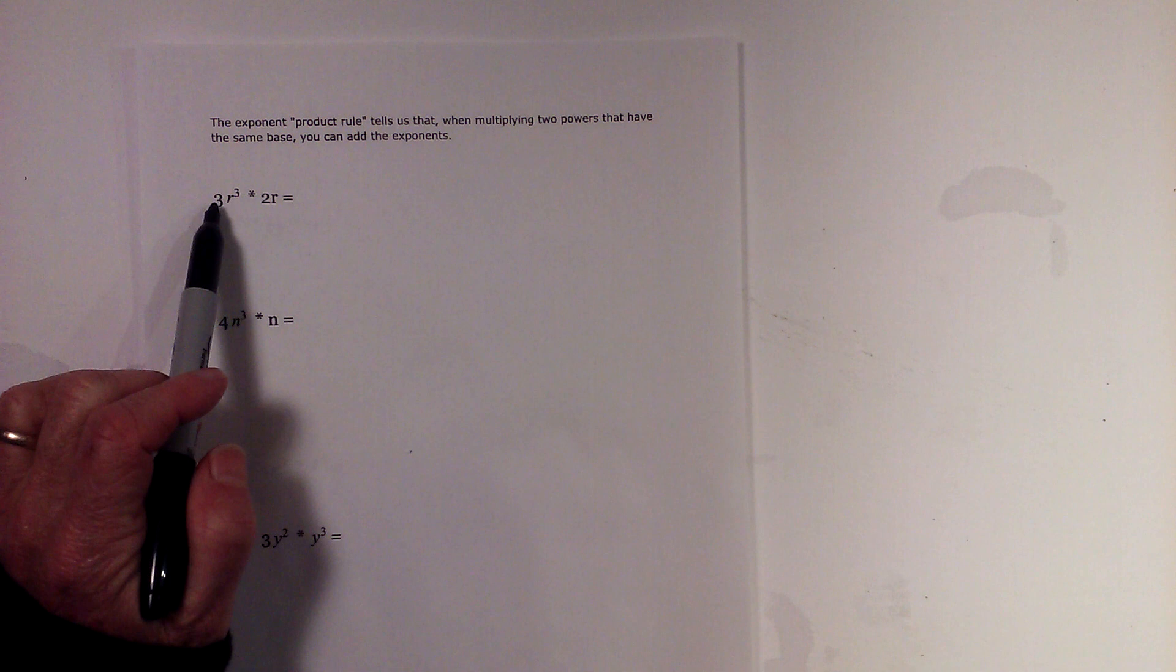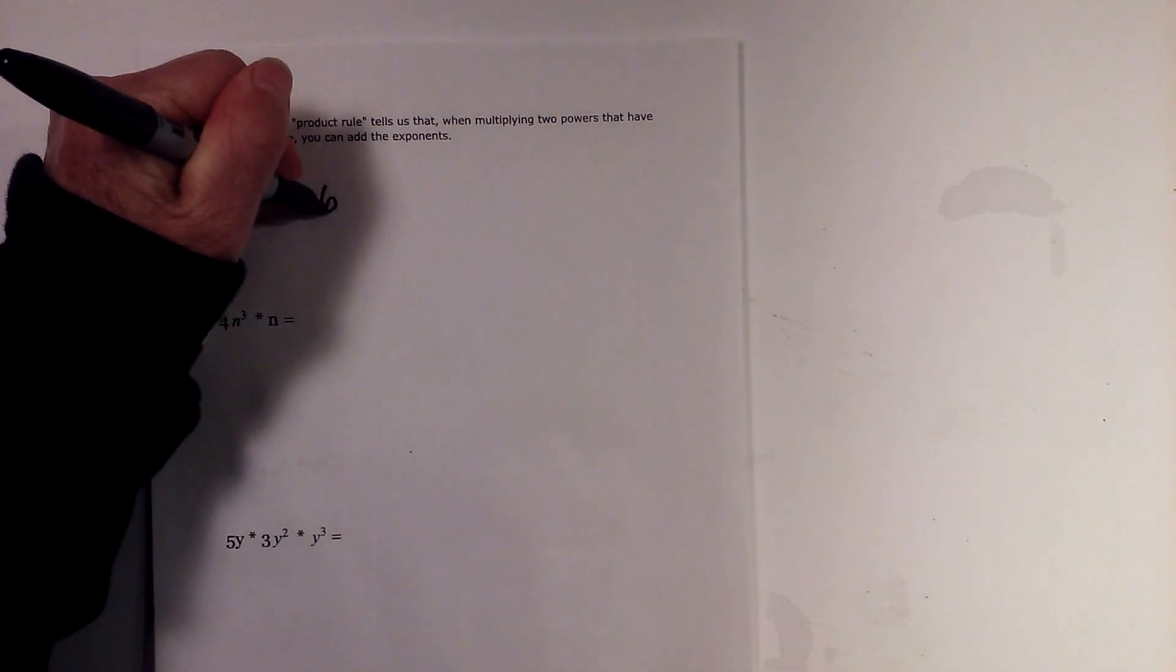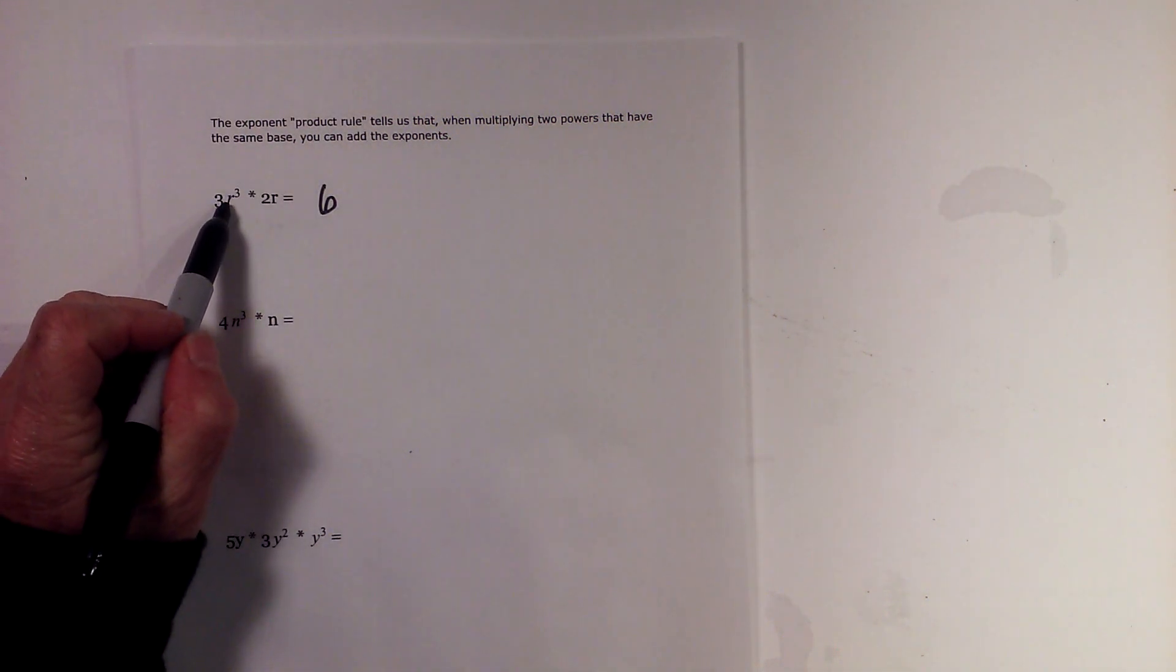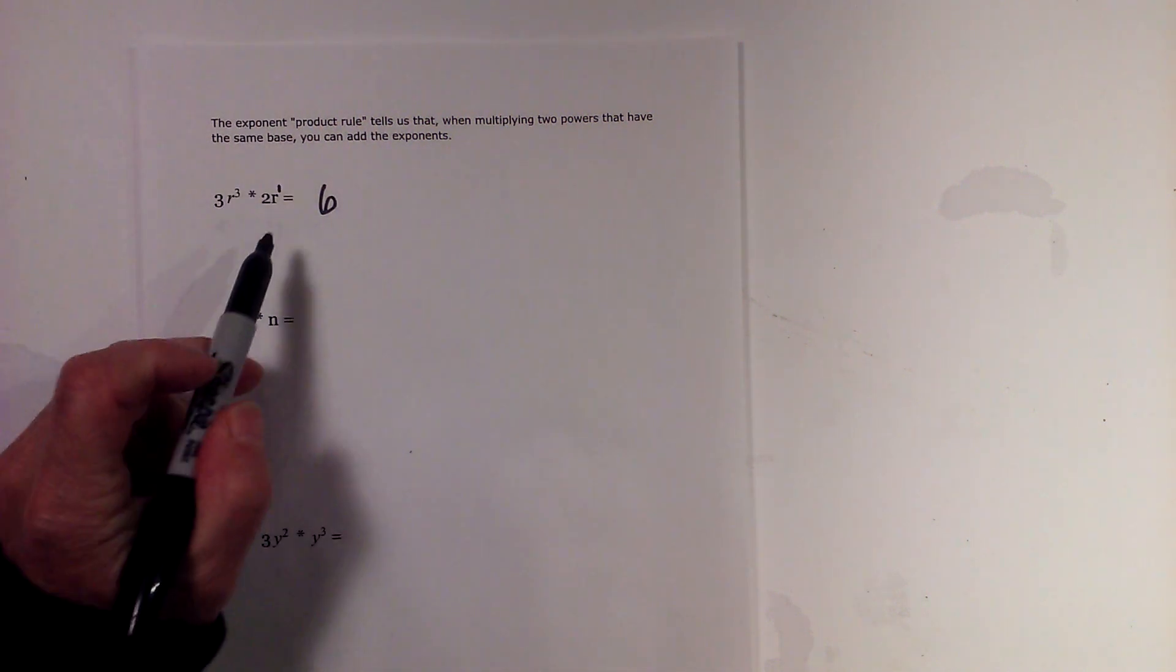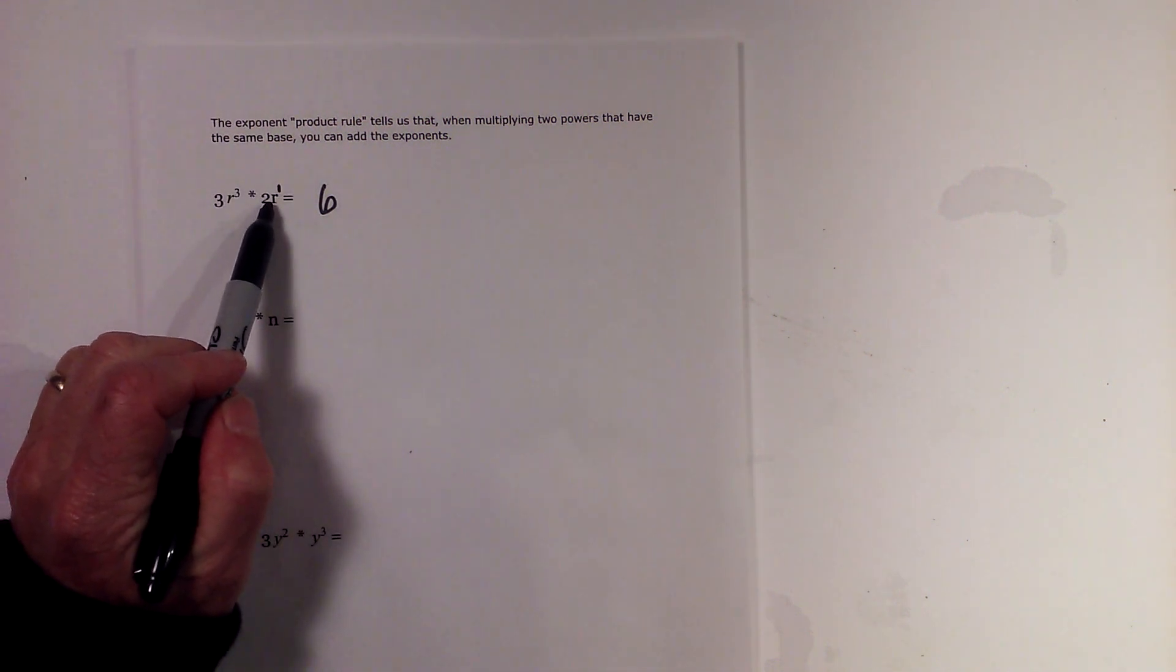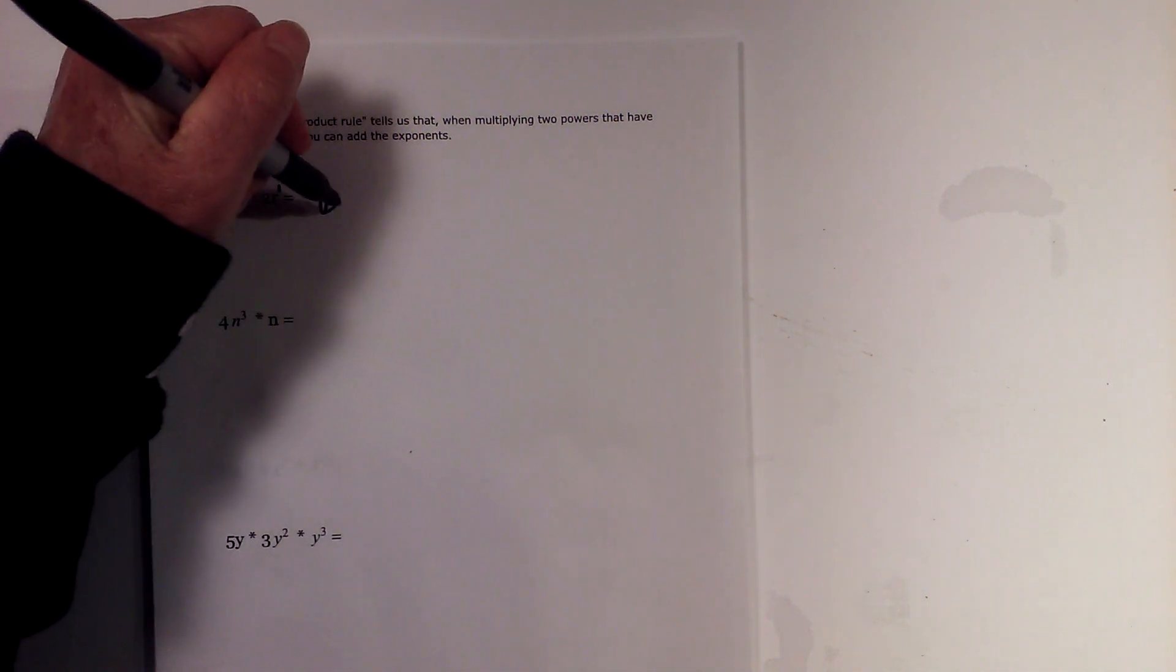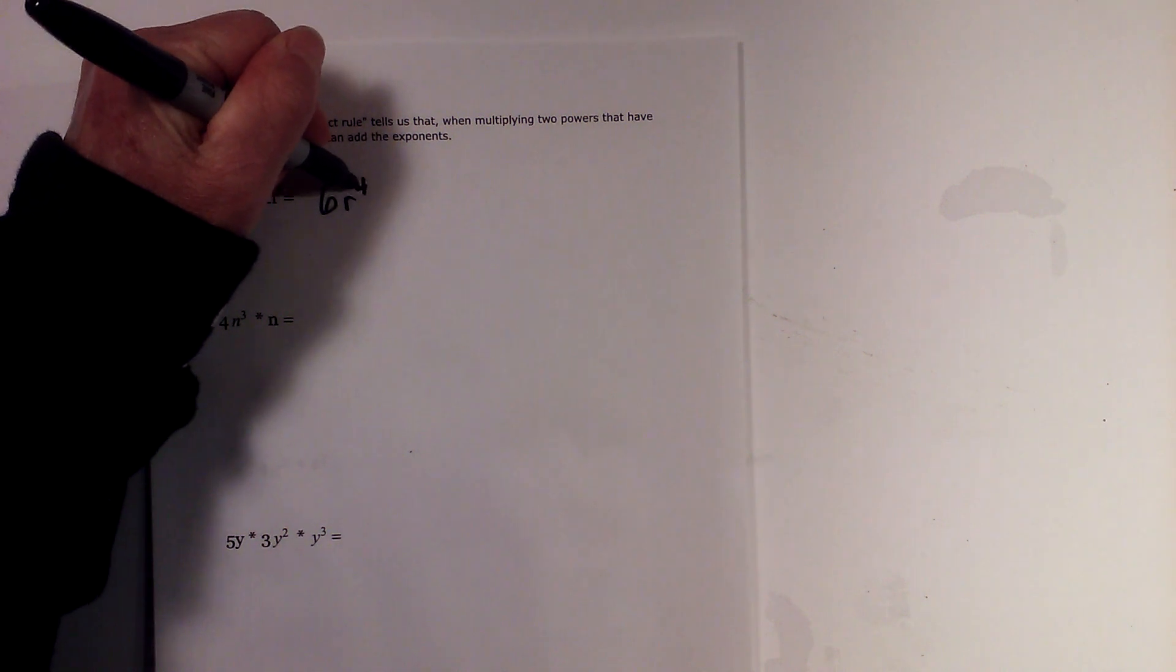This first one: three times two is six, and we have the same bases three and r. Remember, if it's not written then assume there's a one there—it's r to the power of one. So three plus one is r to the fourth, three plus one equals four.